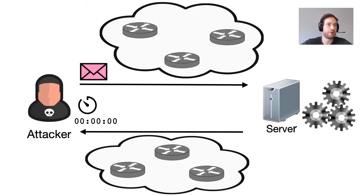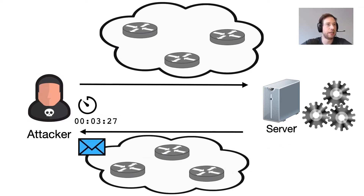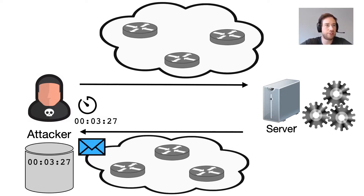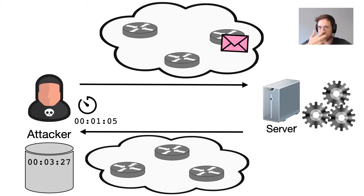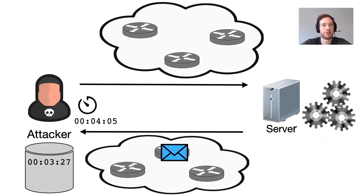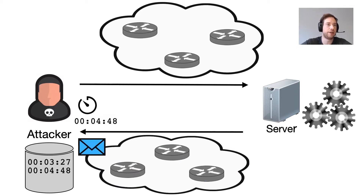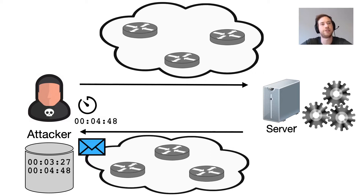Let's first explore how a typical timing attack works these days. The attacker simply sends a request to the server and measures the time it takes before a response arrives. Usually the attacker will need multiple measurements because there might be some jitter, and the attacker stores this information in a database and then makes a second request. There was a short delay on the third network hop that resulted in a larger time for the request. This request took 4 seconds and 48 milliseconds, so slightly higher. The attacker will probably have to make quite a lot of these requests.